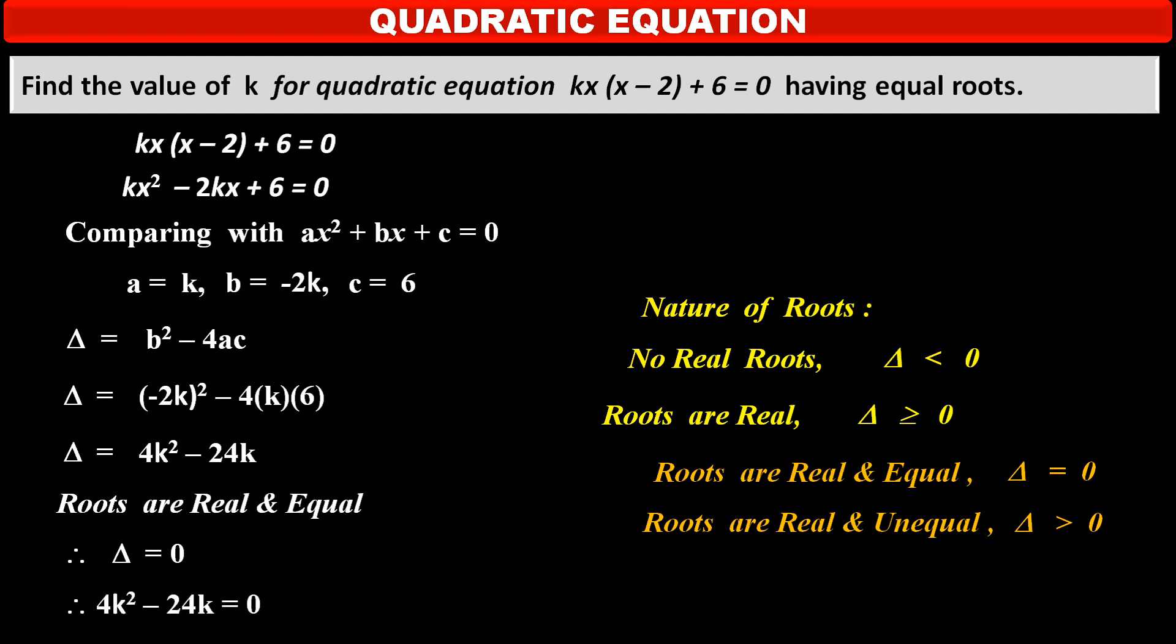Therefore, value of discriminant, 4k² - 24k, is equal to 0.